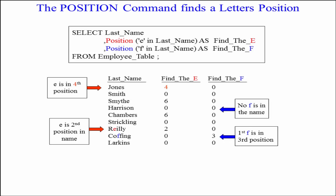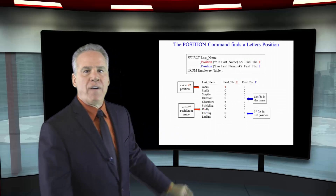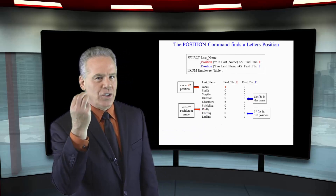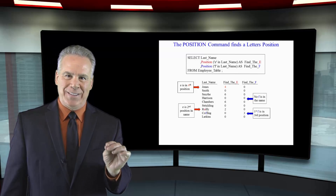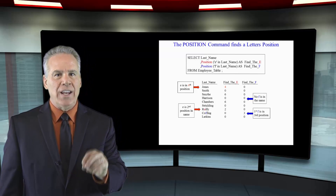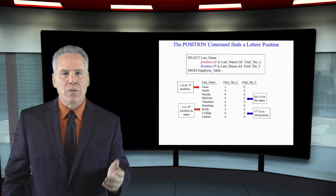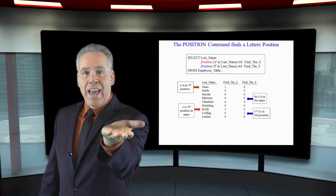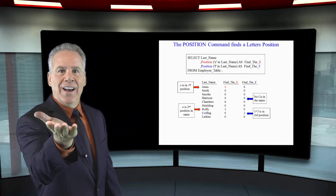As you can see with Jones, the fourth character — J-O-N-E — is where the E is. But notice the zero in 'find the F' because there is no F in Jones. If we scroll down a bit, we can see in the 'find the F' column that 'Coughing' has the F found in position three, but there are two F's in Coughing. You must understand that the POSITION command will find the first occurrence of that particular letter, and if it doesn't find any, it returns zero.